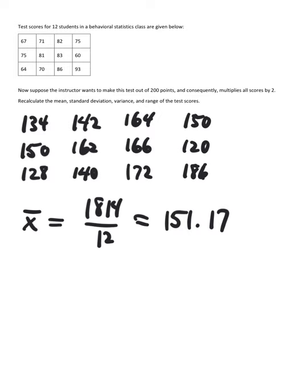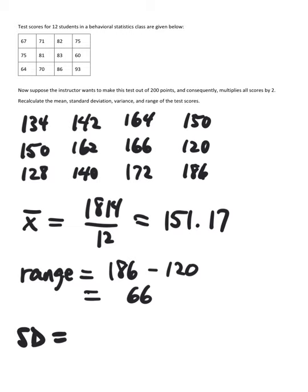Let's just do range first. That's the order we've been doing it in. So we've got the high score 186 minus the low score of 120, which is 66. The standard deviation that I have from my calculator is 19.455. And so variance will be the square of that, 378.497.